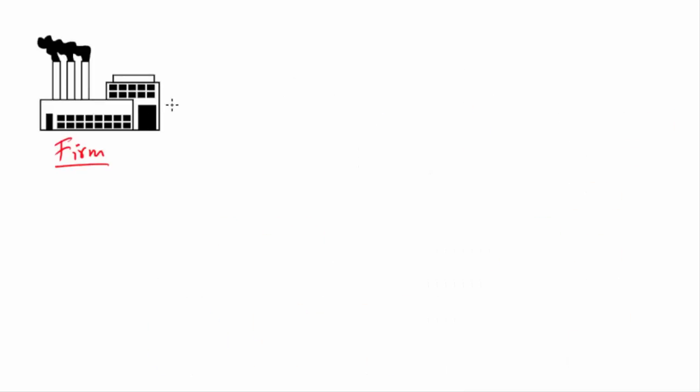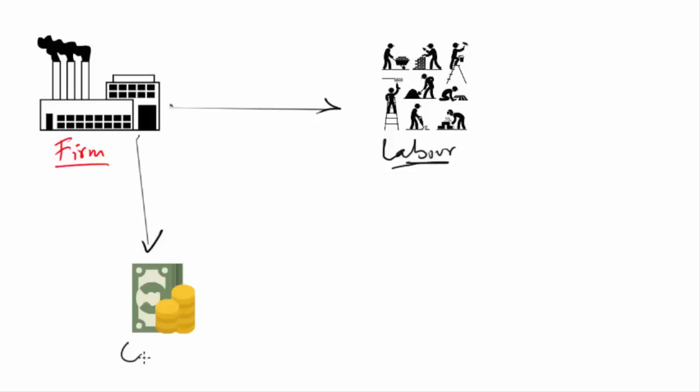Now you need another important element to carry out your production. Basically, human manpower. We refer to this as labor. So far we have built three factors: capital, production, and labor.